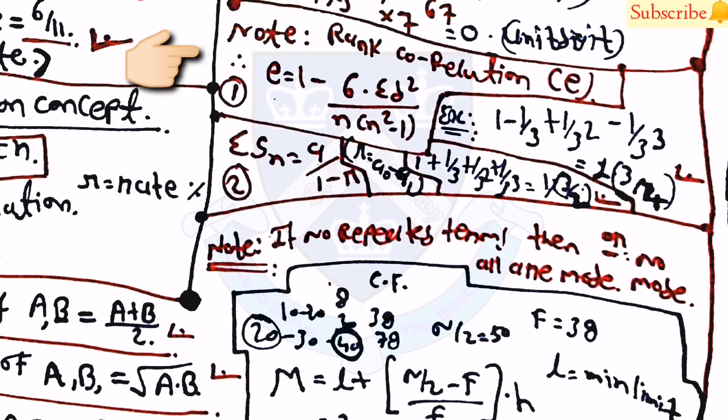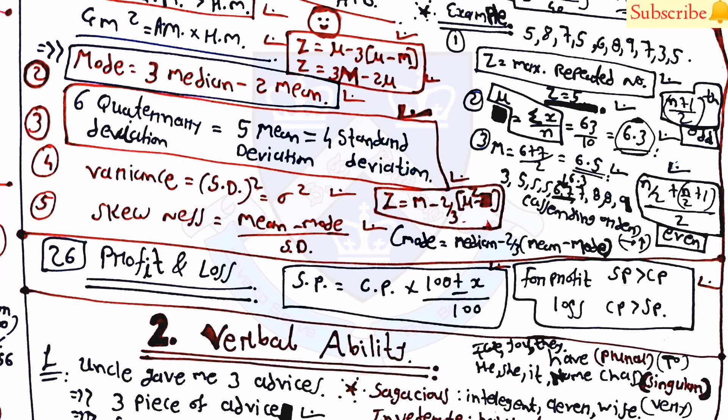Topic 25 covers rank correlation: ρ = 1 − (6·Σd²) / (n(n²−1)), and the summation of a geometric series σ(n) = a/(1−r). Topic 26 is profit and loss: Selling Price = Cost Price × (100 ± x)/100, where selling price > cost price means profit, and cost price > selling price means loss. The question of selling price is particularly important.